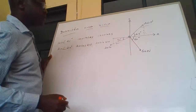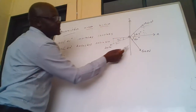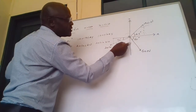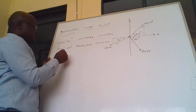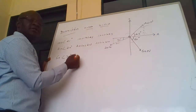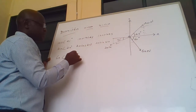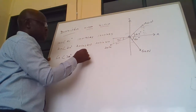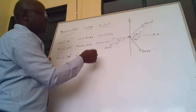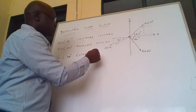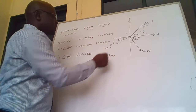And then the last force is 60 N. Measuring from here up to that point, this angle is 300 degrees. So the X component would be 60 cos 300, and the Y component would be 60 sin 300.